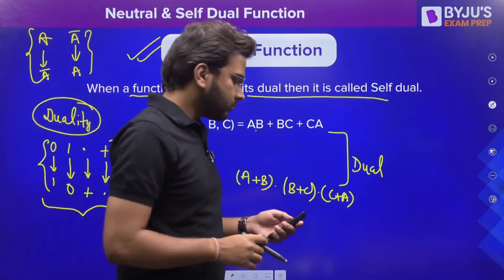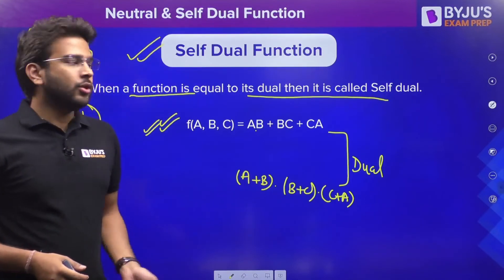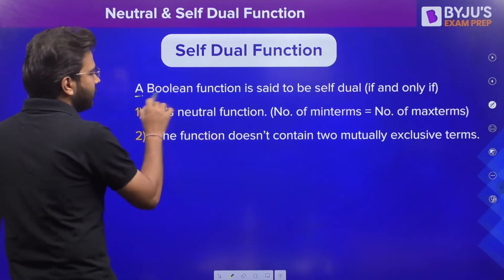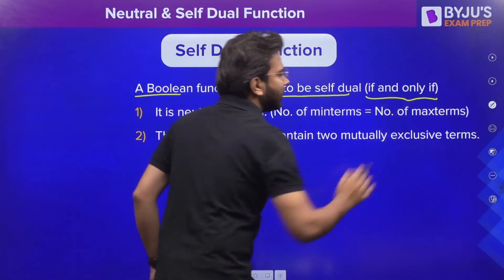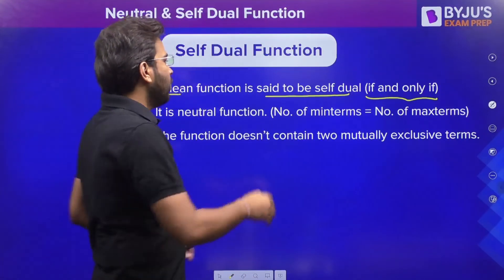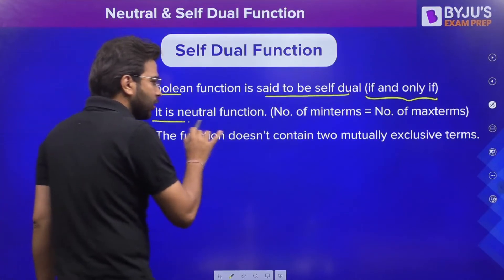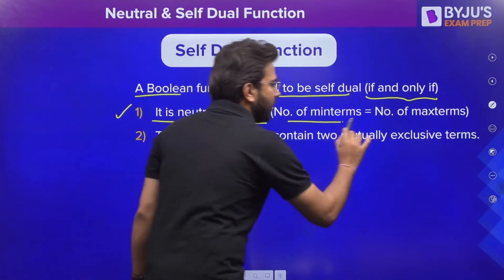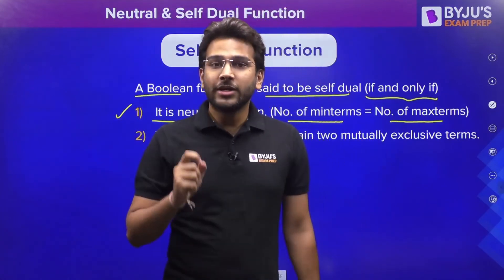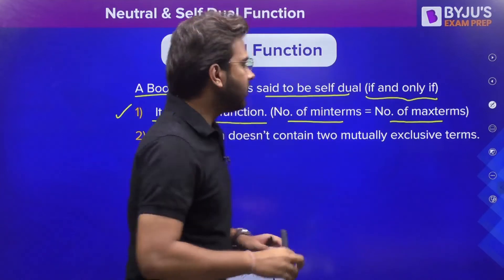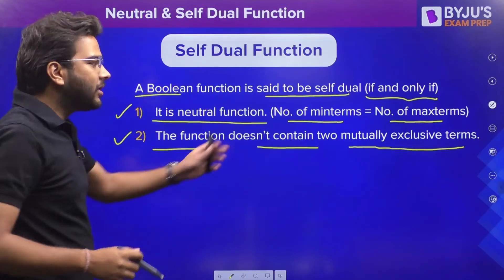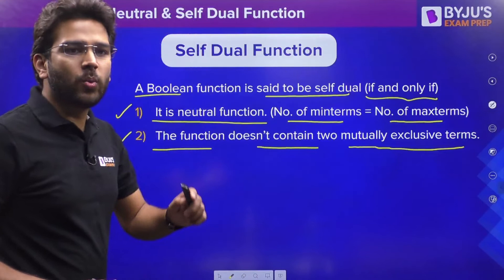Now which functions are self-dual? A boolean function is said to be self-dual if and only if — that means it is a necessary and sufficient condition — it satisfies two conditions. The first condition is that it must be a neutral function, meaning the number of min terms equals the number of max terms. The second condition is that the function must not contain two mutually exclusive terms. Let's understand mutually exclusive terms through an example.